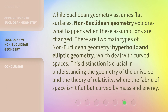While Euclidean geometry assumes flat surfaces, non-Euclidean geometry explores what happens when these assumptions are changed. There are two main types of non-Euclidean geometry — hyperbolic and elliptic geometry — which deal with curved spaces. This distinction is crucial in understanding the geometry of the universe and the theory of relativity, where the fabric of space isn't flat but curved by mass and energy.